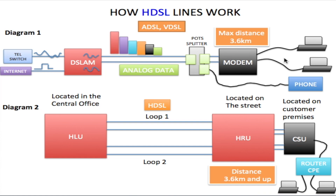Everything works in reverse coming from the modem back to the DSL line. The digital signal comes in from the local area network to the modem; the modem converts that signal to analog, modulates it, and sends it off on the telephone line with the voice signal. When the DSL line receives those signals, it demodulates the data — the data going to the internet is converted to digital and sent to the internet, and the voice signal is sent directly to the telephone switch.